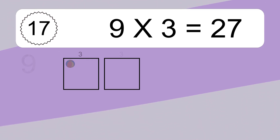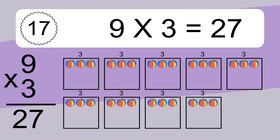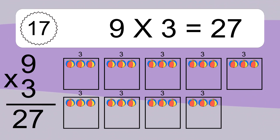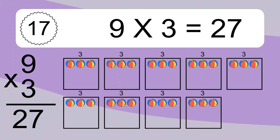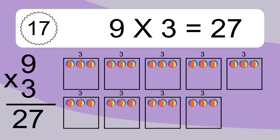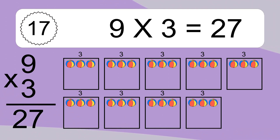9 times 3 equals what? 9 times 3 equals 27. We have 9 boxes, and each box has 3 colorful balls inside. If you count all the balls in all the boxes together, you will have 9 times 3 balls. This equals 27 balls.